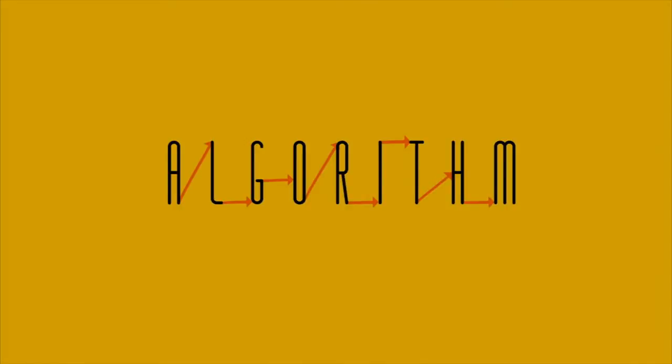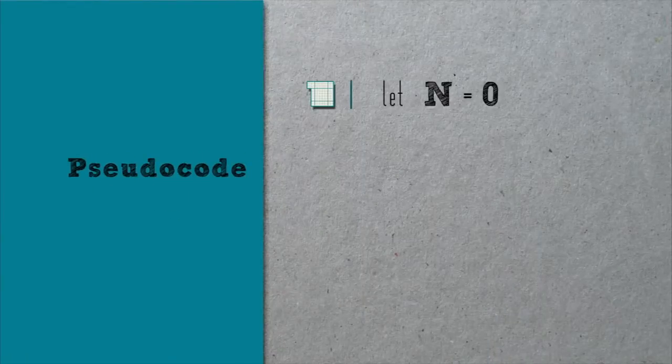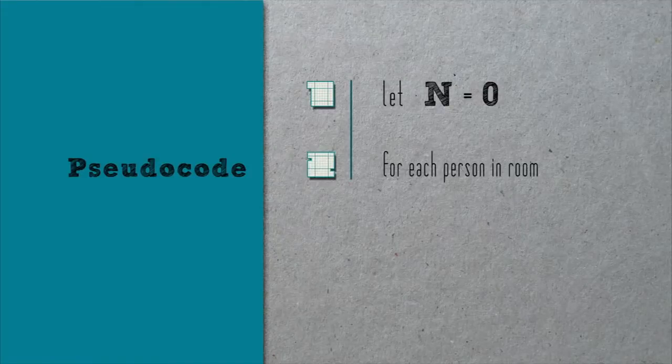In fact, let's try to express it a bit more formally in pseudocode, English-like syntax that resembles a programming language. Let n equal zero. For each person in room, set n equal to n plus one.